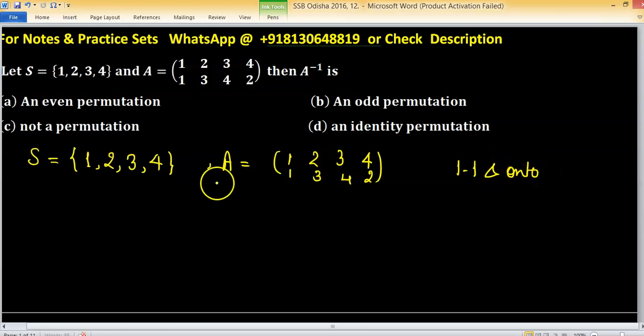So its inverse is just the reverse image. Write 1, 3, 4, 2, which means lower row in upper side and upper row in lower side. So 1, 2, 3, 4. This is your A inverse. In cyclic notation or cycle notation...